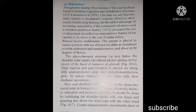Relaxed passive mobilization: the patient is placed with the affected shoulder in maximum possible abduction and neutral rotation, with the elbow in 90 degrees of flexion. The physiotherapist, grasping the arm below the shoulder joint, carries out relaxed passive gliding movements of the head of humerus on the glenoid. Axial traction and approximation are carried out along with anteroposterior glide and abduction-adduction glide to induce relaxation.